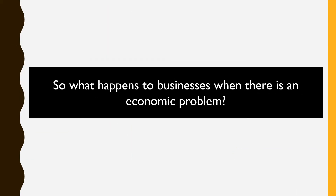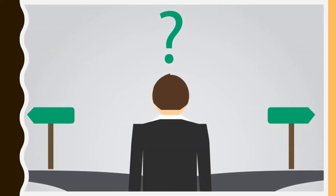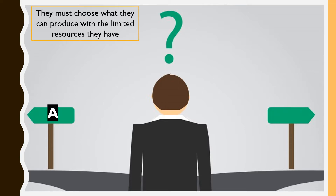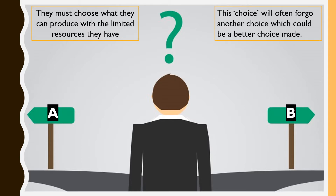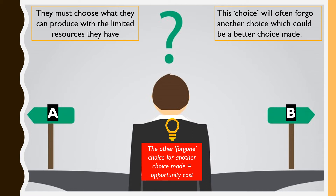So we have understood a little about how an economic problem comes to be. But what should businesses do when there is an economic problem? With an economic problem, there comes a choice you have to make — similar to the picture on the screen showing a crossroads. You have to decide what to produce with limited resources, which means another choice has to be let go. You may not be able to buy both the pants and the shoes you like, but you have to choose one over the other. The one you let go leads to the definition of opportunity cost.